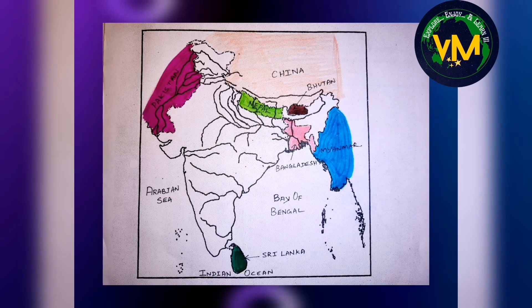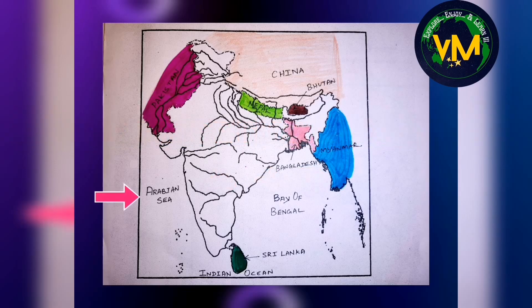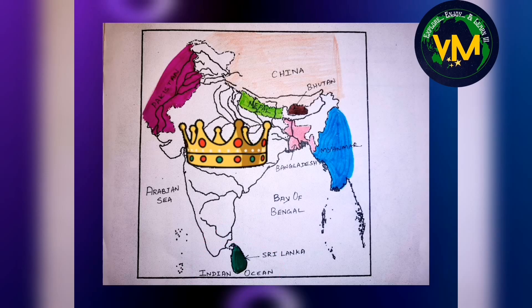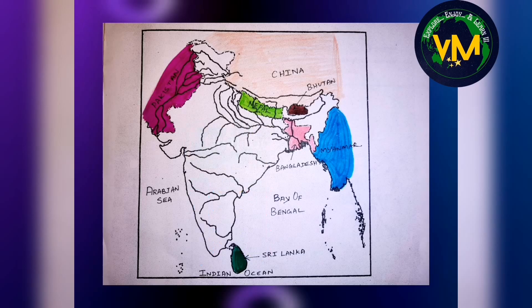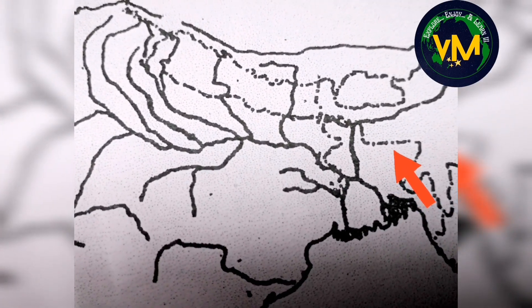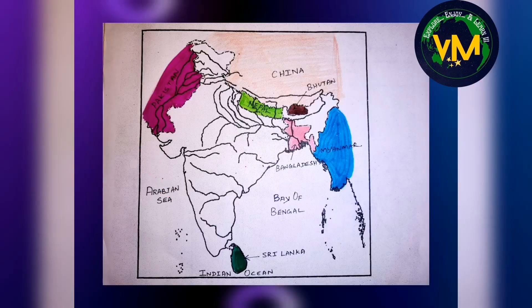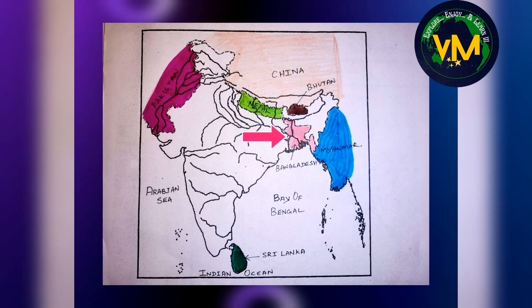You can remember Arabian Sea and Bay of Bengal with the letters A and B in alphabetical order. So the first is Arabian Sea followed by Bay of Bengal. Coming to Indian Ocean — India is the crown of the Indian Ocean, so remember that Indian Ocean is in the south. Now let's learn our neighboring countries. The international boundary is indicated by dash, dot, dash, dot. Our neighboring countries are Bangladesh, Nepal, Bhutan, Myanmar, China, Pakistan, and in the southern side we have Sri Lanka.